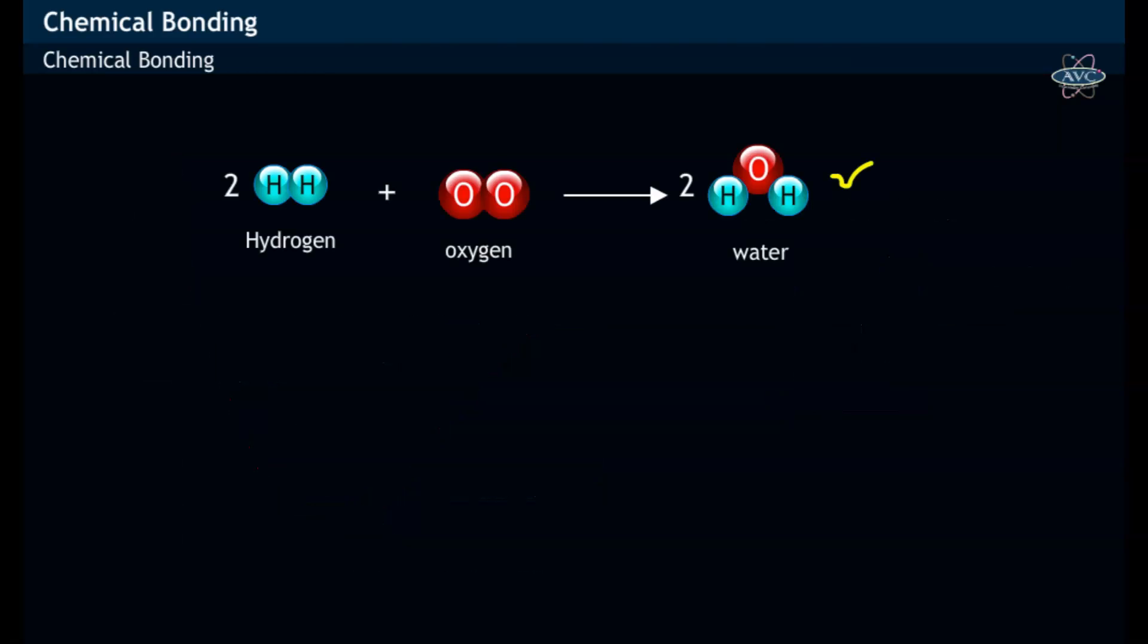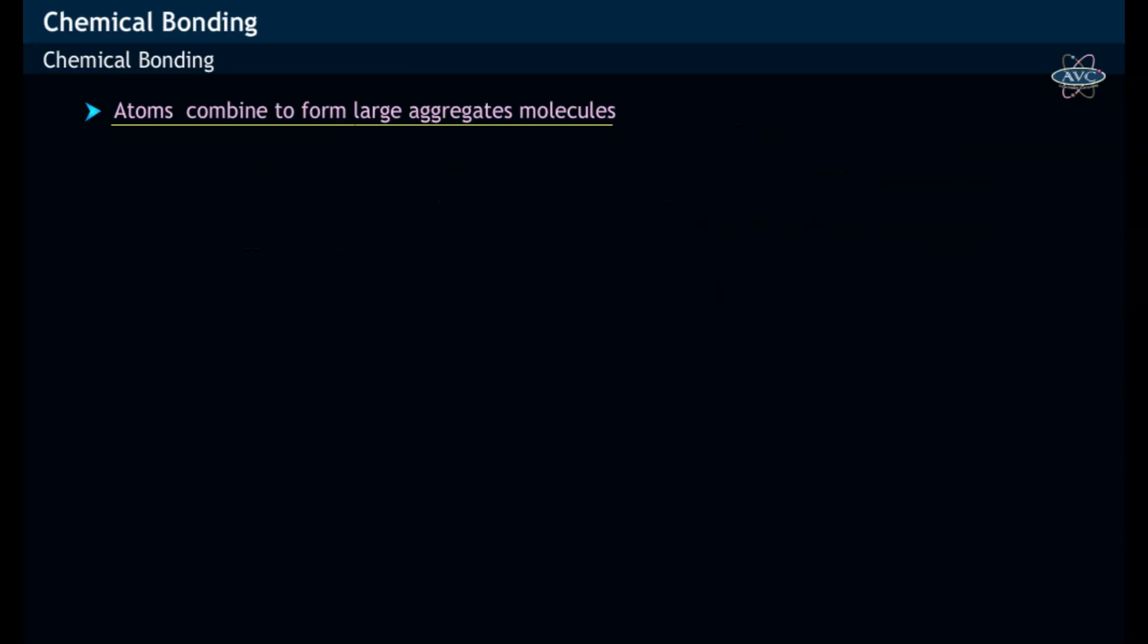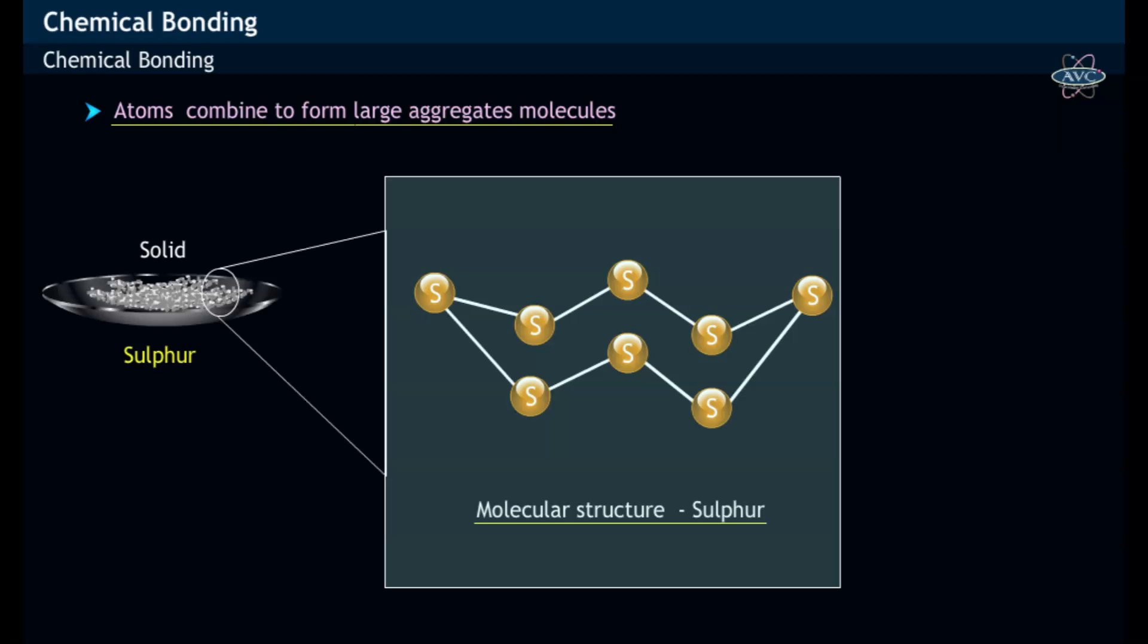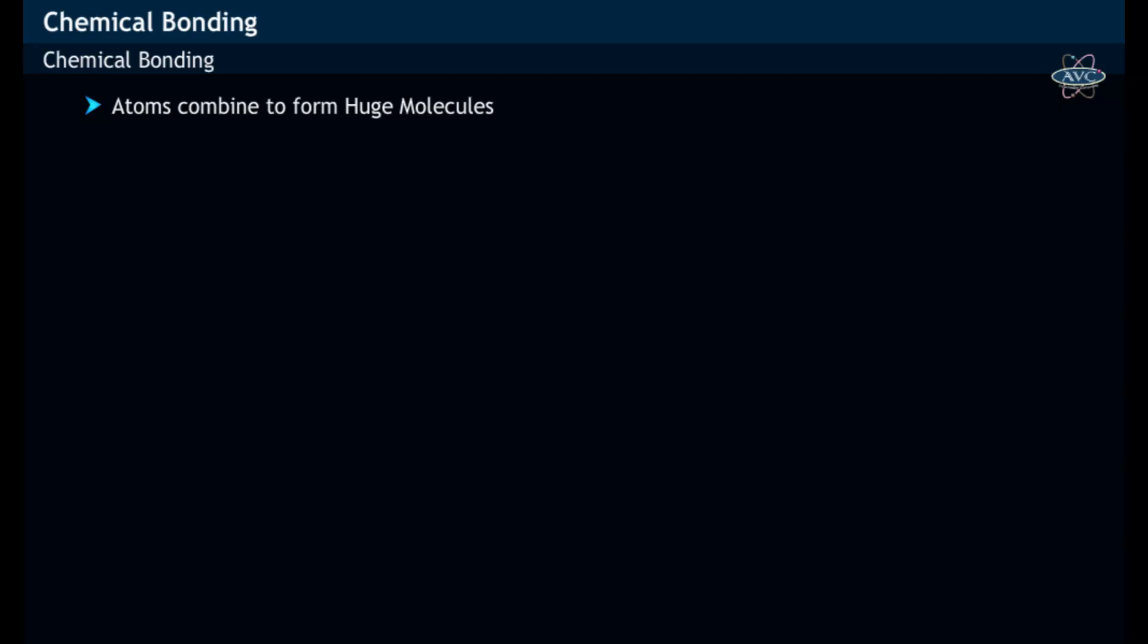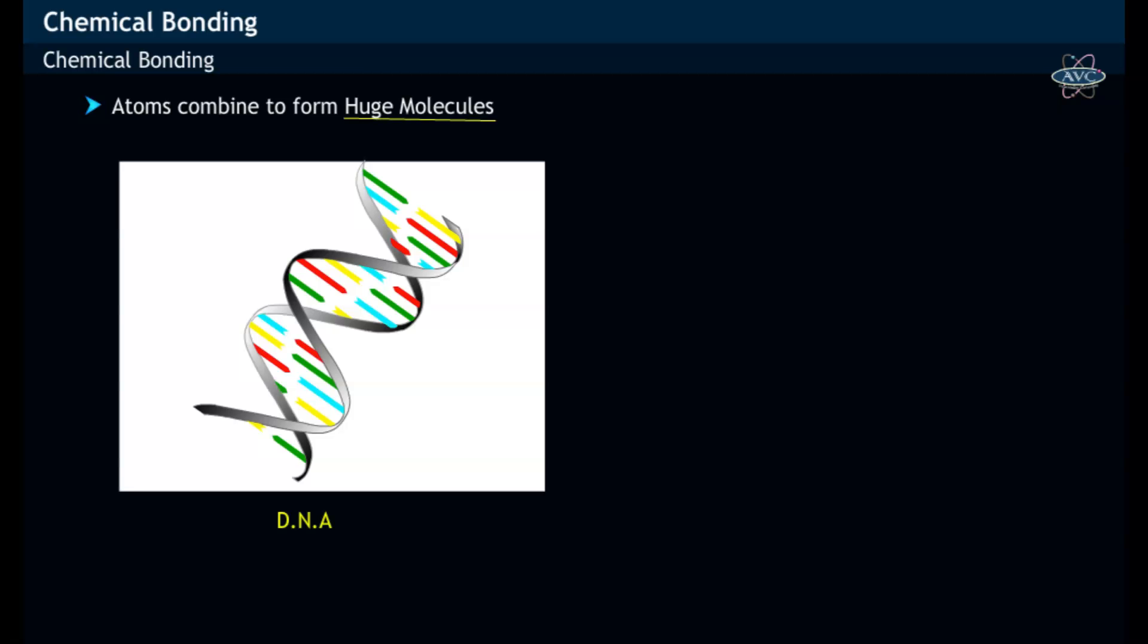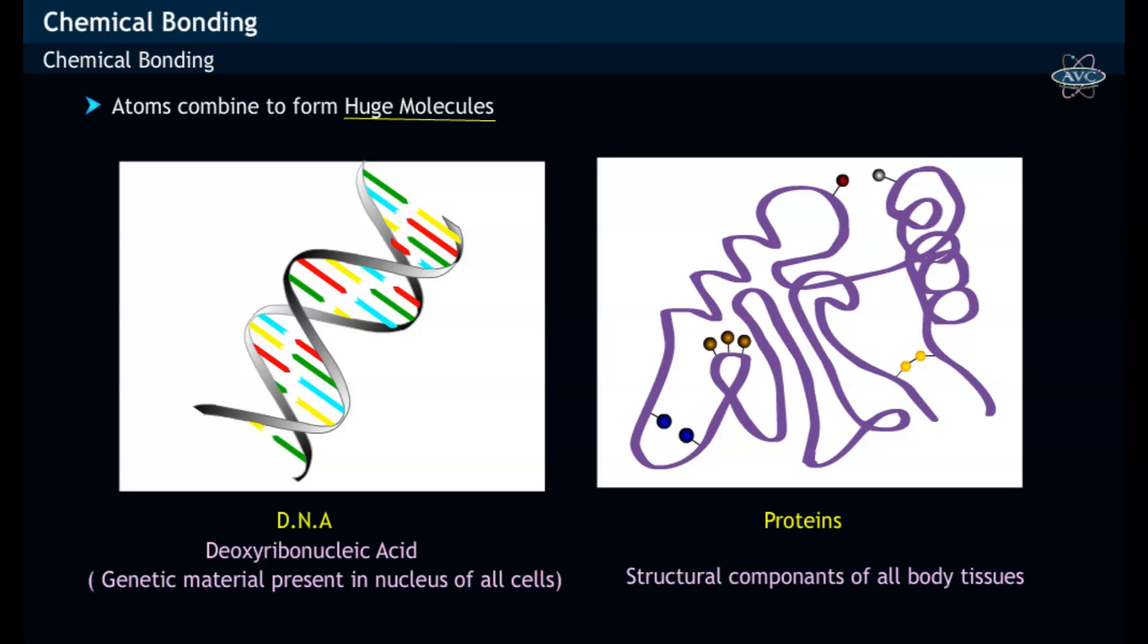Similarly, in case of water, the two hydrogen atoms are chemically bonded to one oxygen atom. Atoms combine to form large aggregates in case of solid sulfur, wherein eight sulfur atoms are bonded to each other, thereby forming S8 molecule which has a crown shape. Similarly, atoms combine to form very large molecules like DNA, proteins, etc.